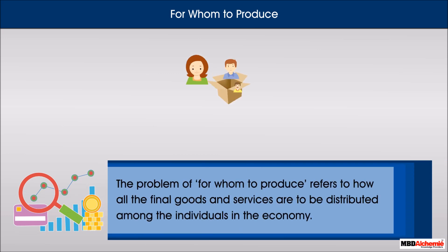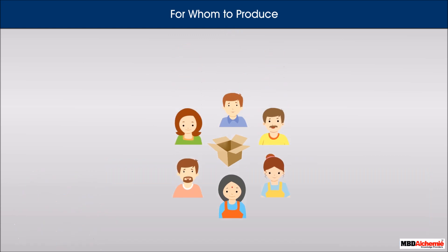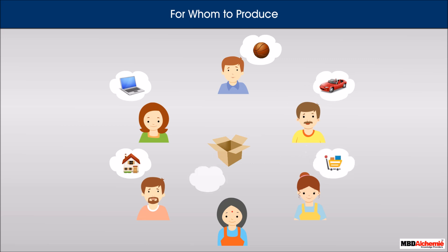The problem of for whom to produce refers to how all the final goods and services are to be distributed among the individuals in the economy — who gets more and who gets less, and whether or not to ensure a minimum amount of consumption for everyone. Since it is not feasible for an economy to satisfy everyone's wants due to scarcity, it must decide on whose wants are to be satisfied.